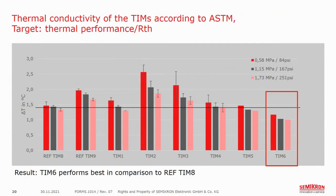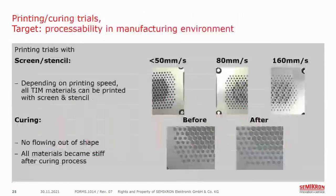Here you can see the result. Compared to our reference TIM8, TIM material 6 offers the lowest delta T and thus the best RTH. We also performed printing trials with our series production equipment and machines. All materials could be well printed independent of the scraper speed up to 50 mm per second. None of the patterns flow out of shape, and after the heat-up process and after the material cools, all of them became rigid as expected.